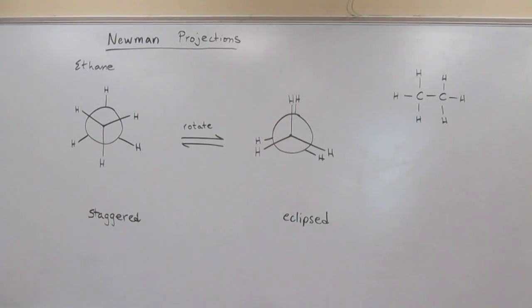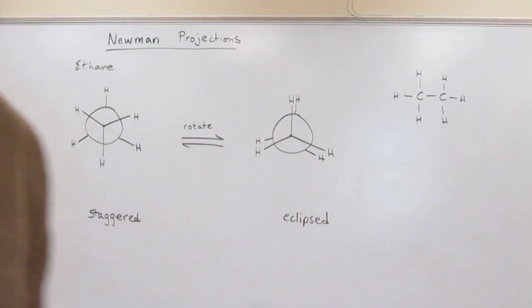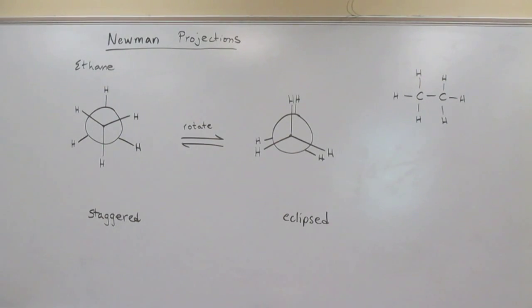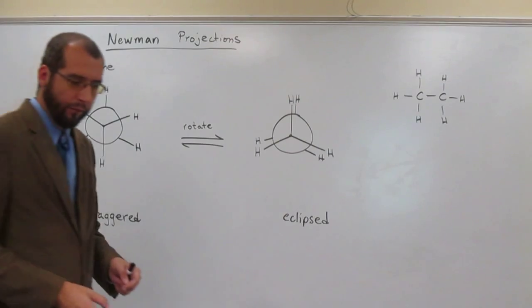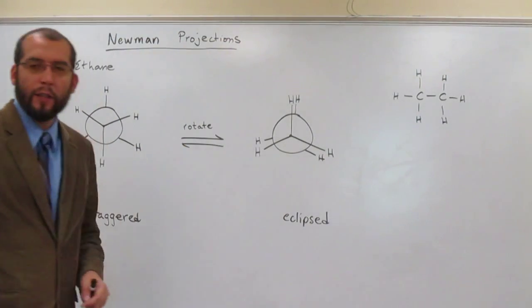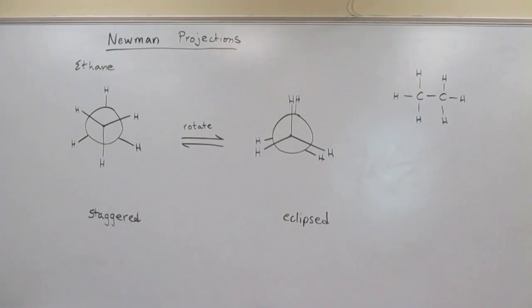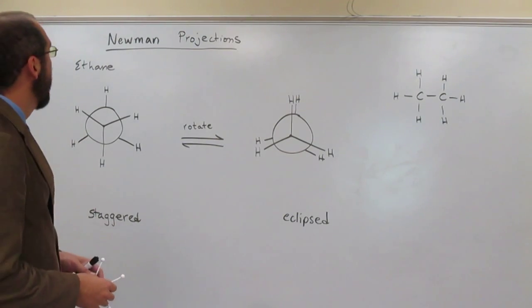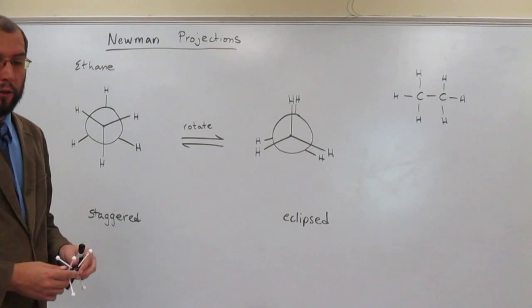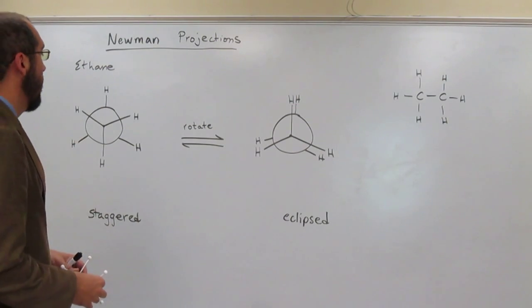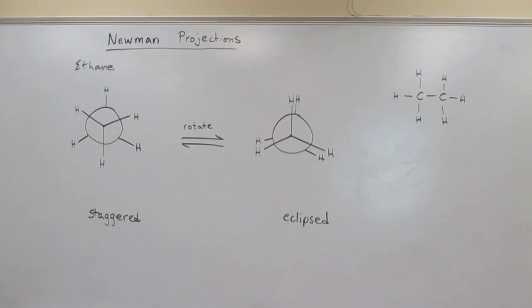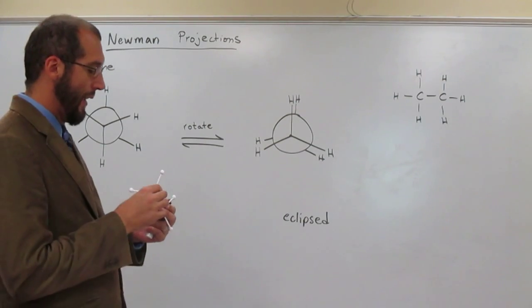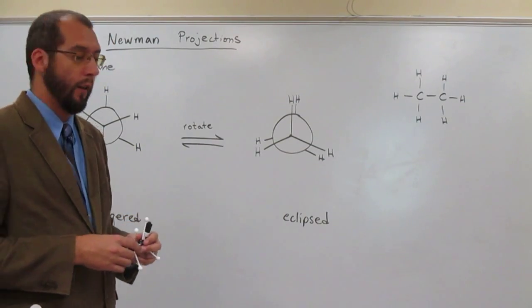So we just talked about sawhorse representations of ethane and compared them to the model of ethane that we had. Now we're going to talk about a different projection, a different way to look at the molecule ethane, and it's called the Newman projection. We can do this with any molecule, just like we could with the sawhorse representation, but since ethane is a very simple molecule, we'll start there.